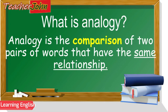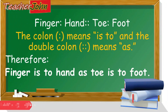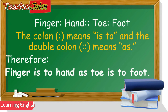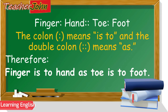Analogy is the comparison of two pairs of words that have the same relationship. Let's take a look at this model: Finger. Toe. Foot. The colon means 'is to' and the double colon means 'as.' Therefore, finger is to hand as toe is to foot. Let's have examples.